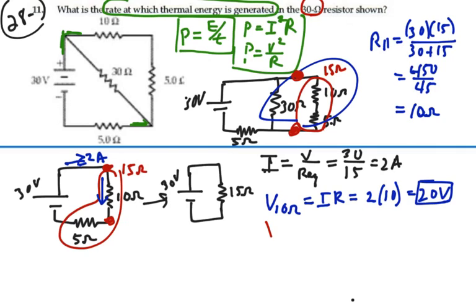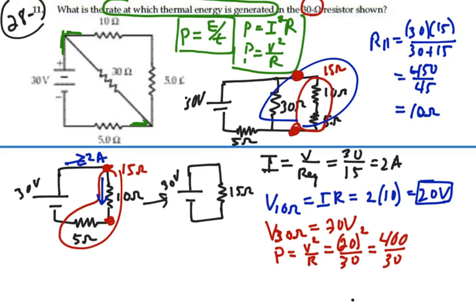So that means that the voltage of the 30 ohms is also 20 volts. If I want to find the power in the 30 ohm resistor, the power would equal its voltage squared over its resistance, which would be 20 volts squared over 30 ohms, which is 400 divided by 30. When the zeroes cancel out, that's 40 divided by 3, or 13.3 watts.